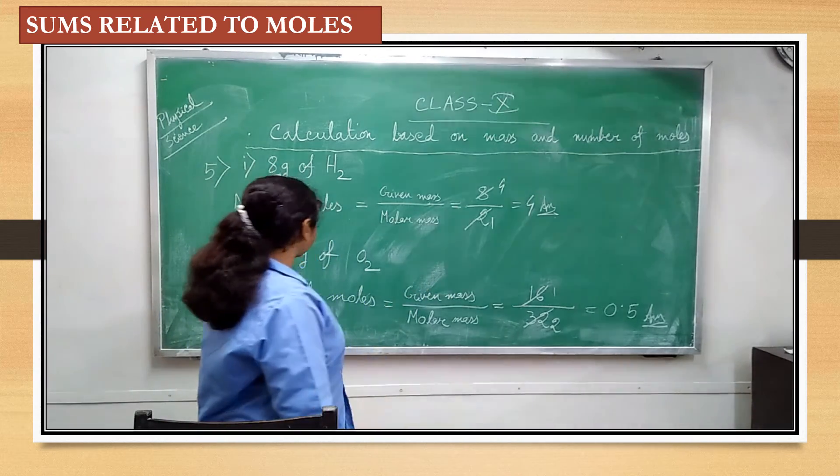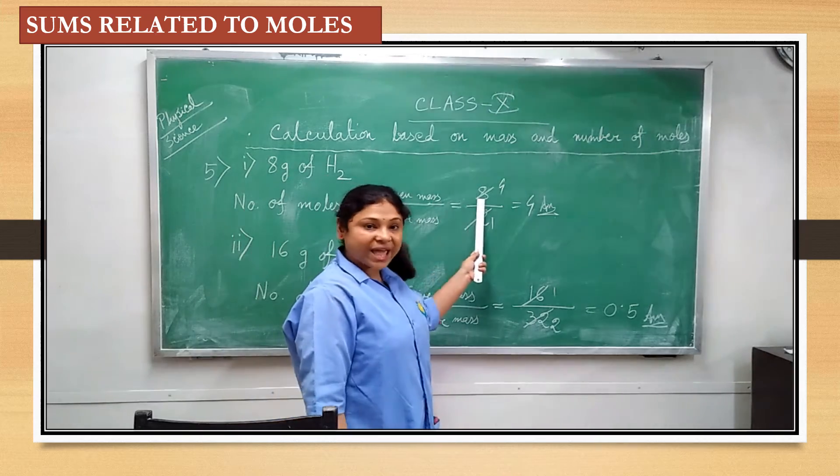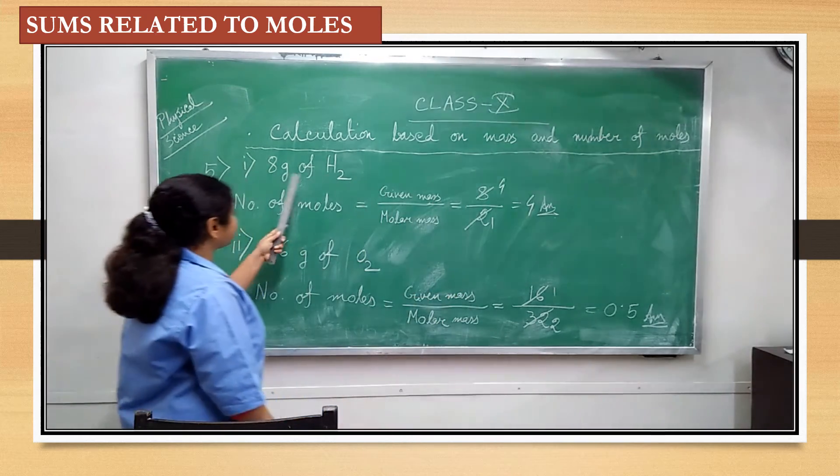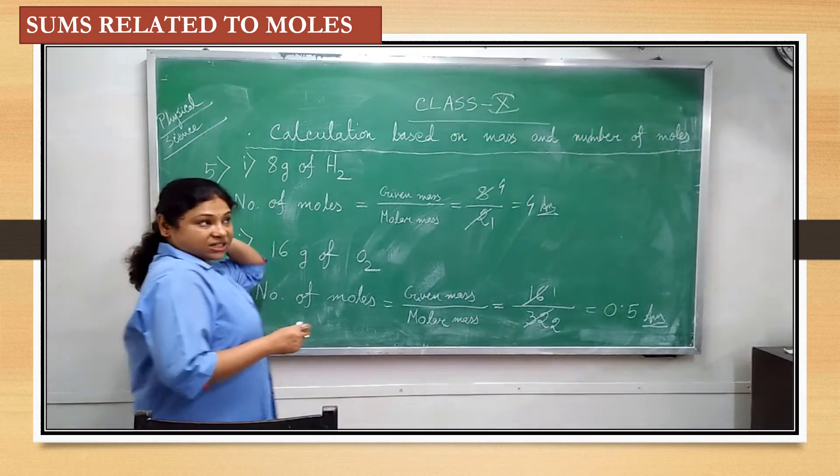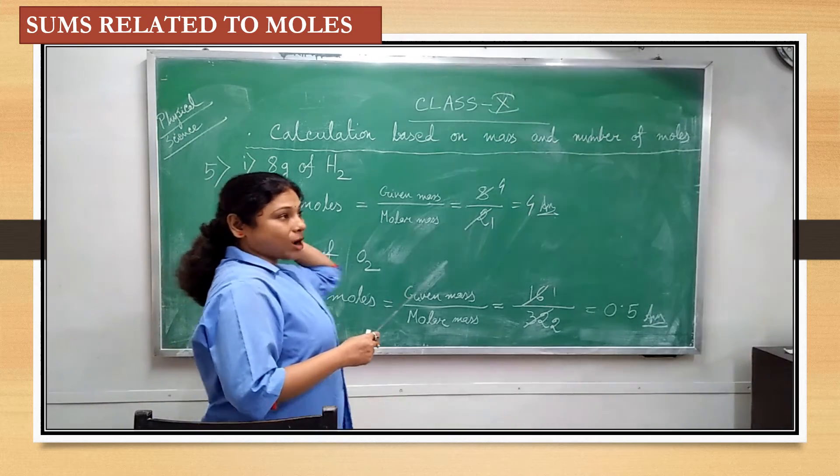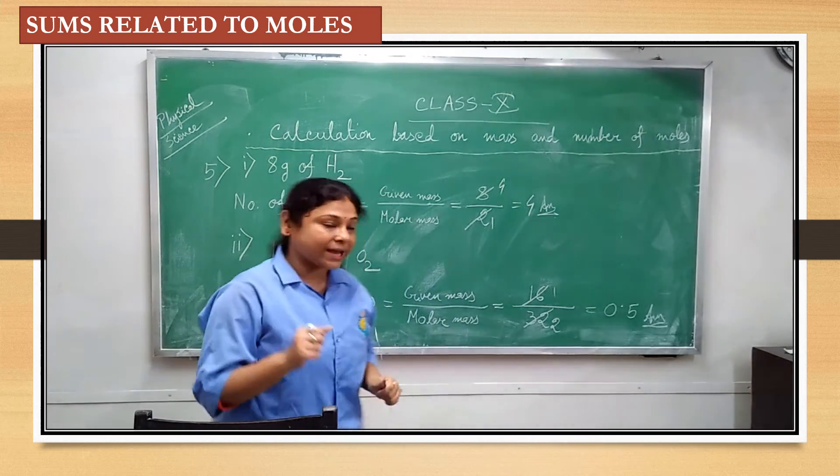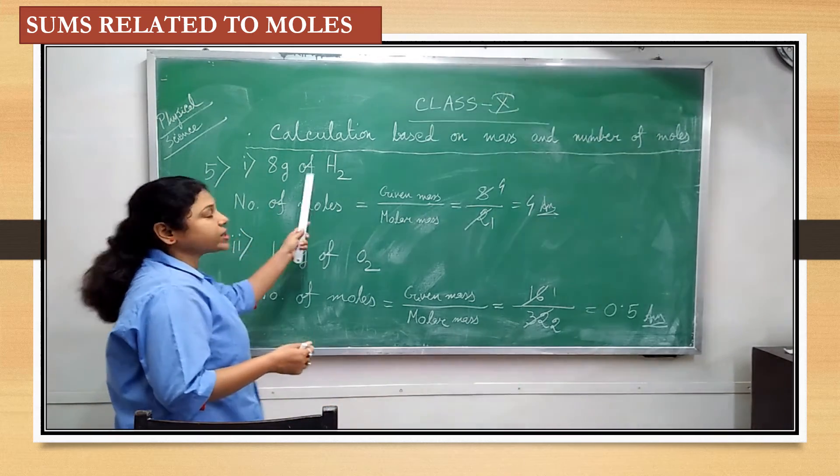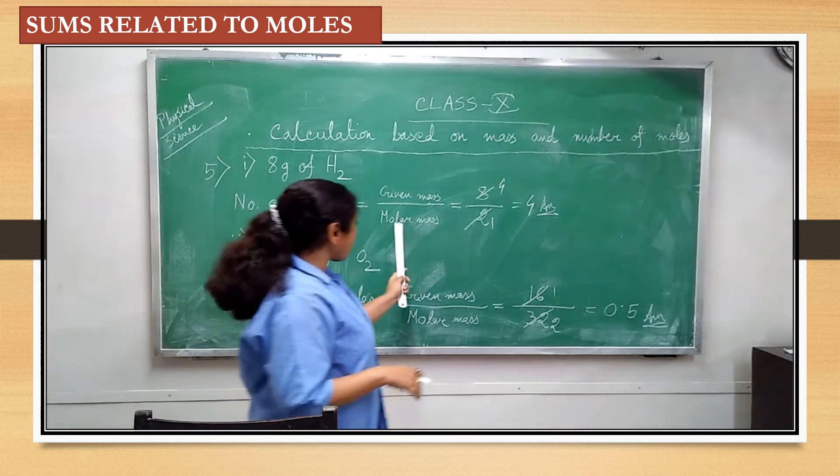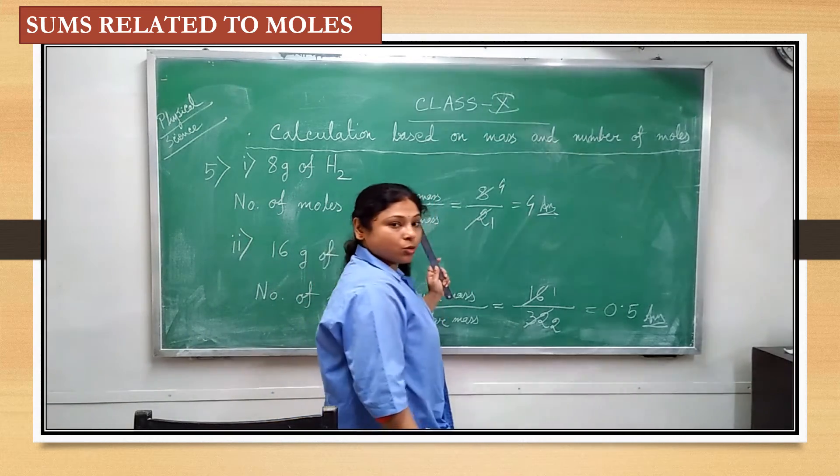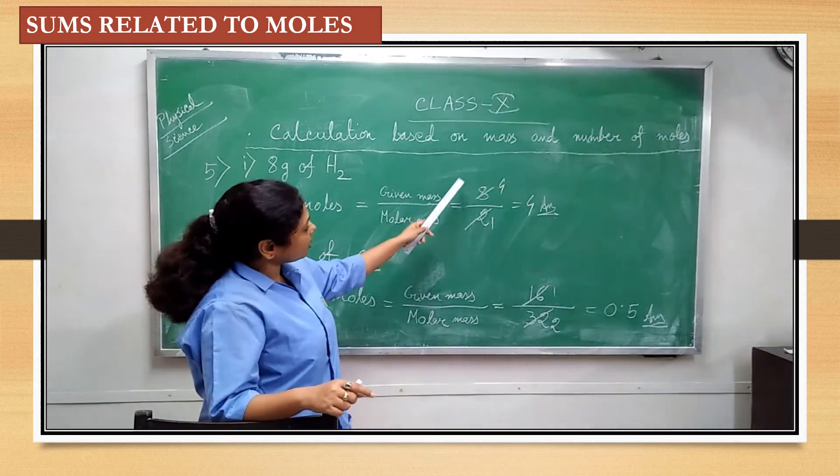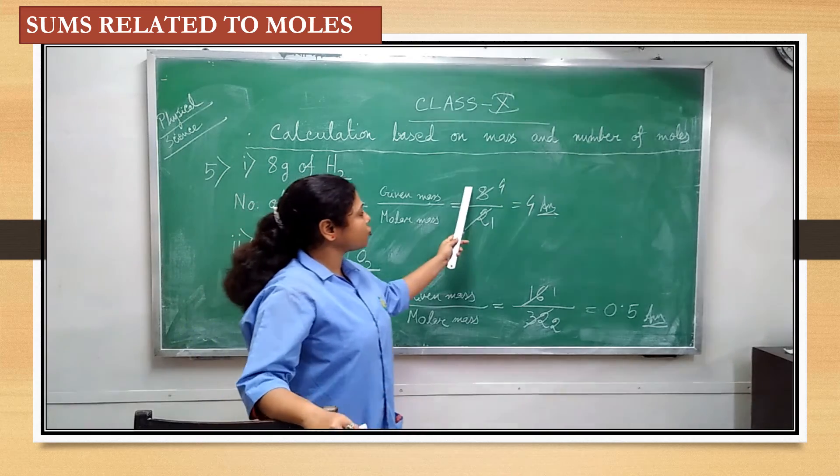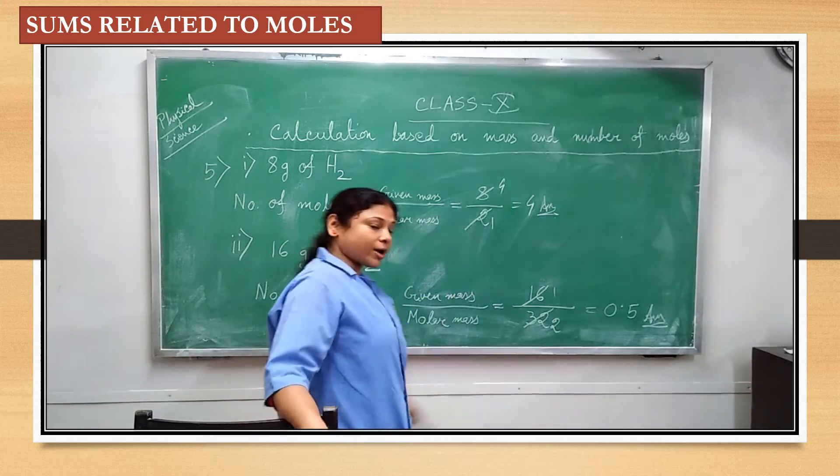Given mass is 8, 8 gram. So, given mass will be 8. And, molar mass will be molar mass. Is equal to actually molecular mass or molecular weight like that. So, molecular weight of H2 is equal to 2 into 1, that is 2. So, molar mass will be 2. Remember this. So, 8 by 2, and this will be 4. Okay.